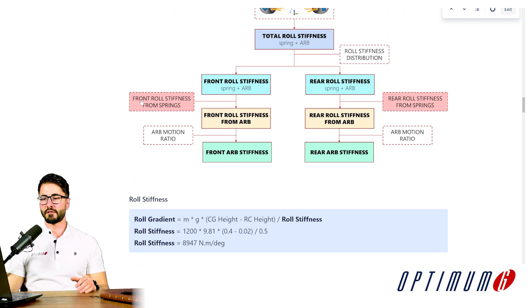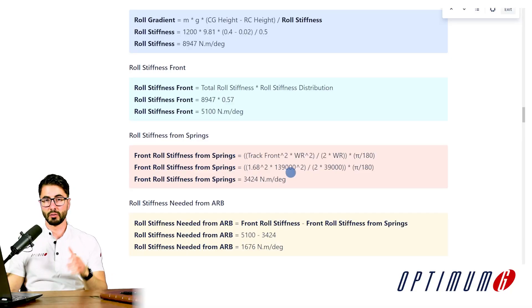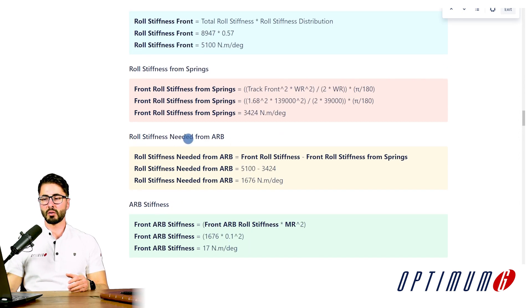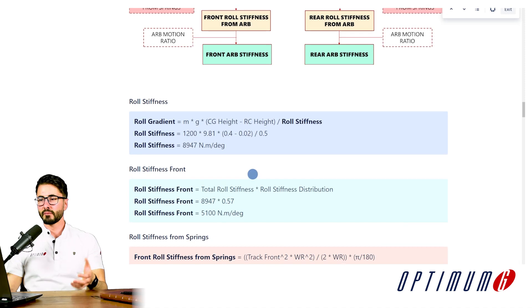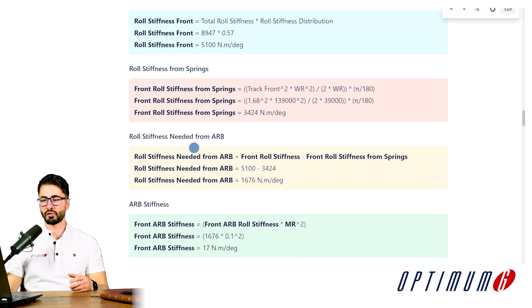Next, in light red, we calculate the front roll stiffness already coming from the springs we designed. Once we have the total roll stiffness and the roll stiffness from the springs, since they are in series, we can calculate the roll stiffness needed from the anti-roll bar as: total roll stiffness minus the contribution already coming from the springs. Lastly, in the final green step, we convert from vehicle-level stiffness to component-level stiffness using the anti-roll bar motion ratio.